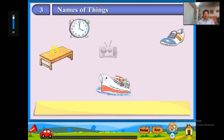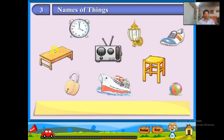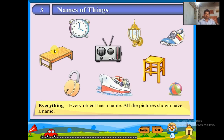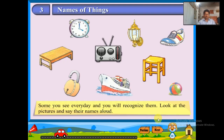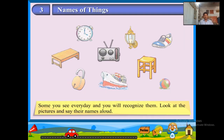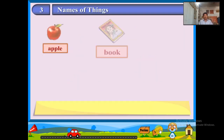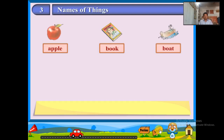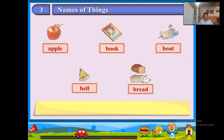Everything, every object has a name. All the pictures shown have a name — some you see every day and you will recognize them. Look at the pictures and say their names aloud: apple, book, boat, bell, bread, coat, chair, clock.